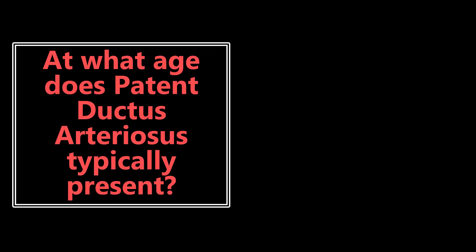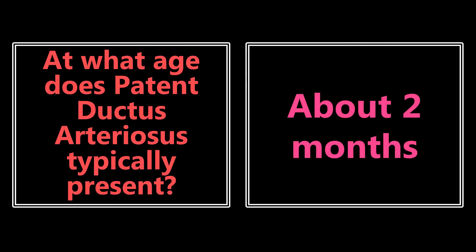At what age does patent ductus arteriosus typically present? This presents at about two months of life. As the pulmonary pressure decreases, blood will flow from the aorta back into the right ventricle. This occurs at about two months, and then the baby will start to have symptoms of CHF and pulmonary hypertension — occurring at about two months of age.